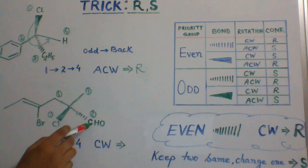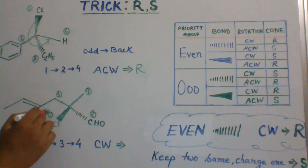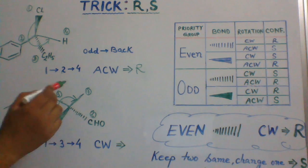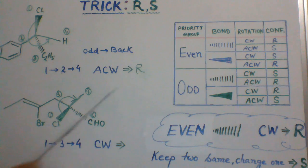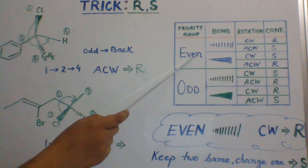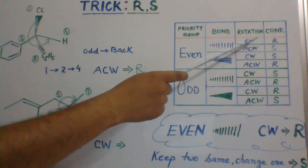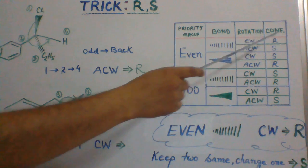This group — it is even priority number — is pointing below the plane of the board. So, leaving this group, we can connect all other groups: one, three, four. Connecting one, three, four makes clockwise movement. When there is an even priority group which is below the plane of the board and makes clockwise rotation, then the chiral center is configured as R.